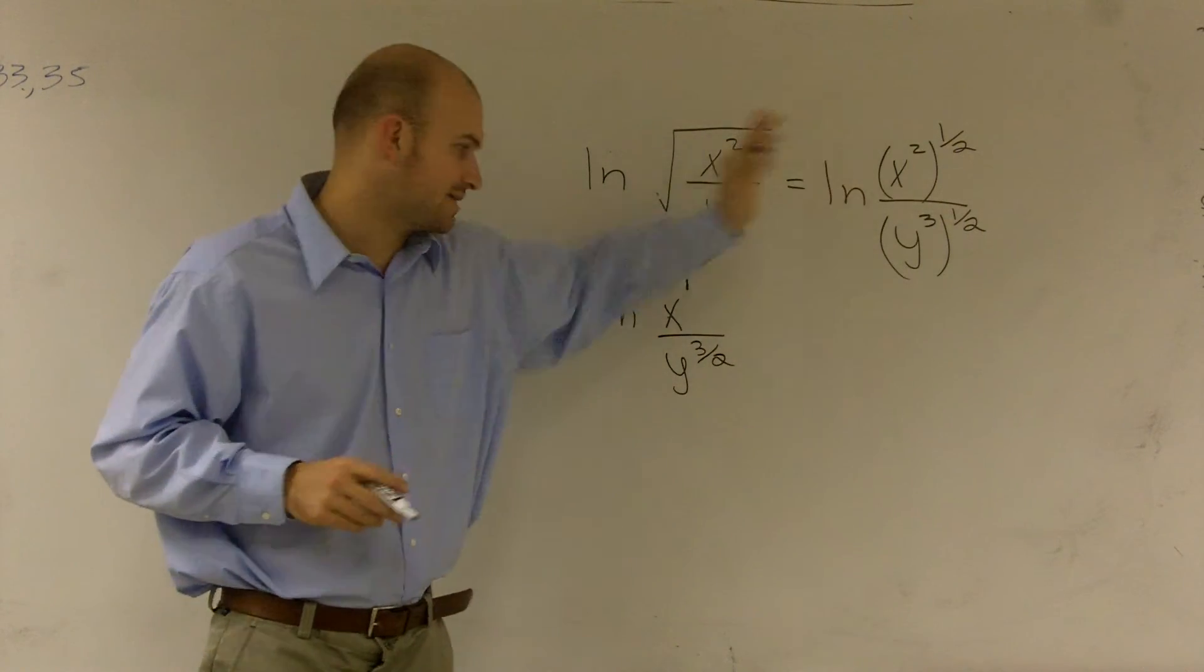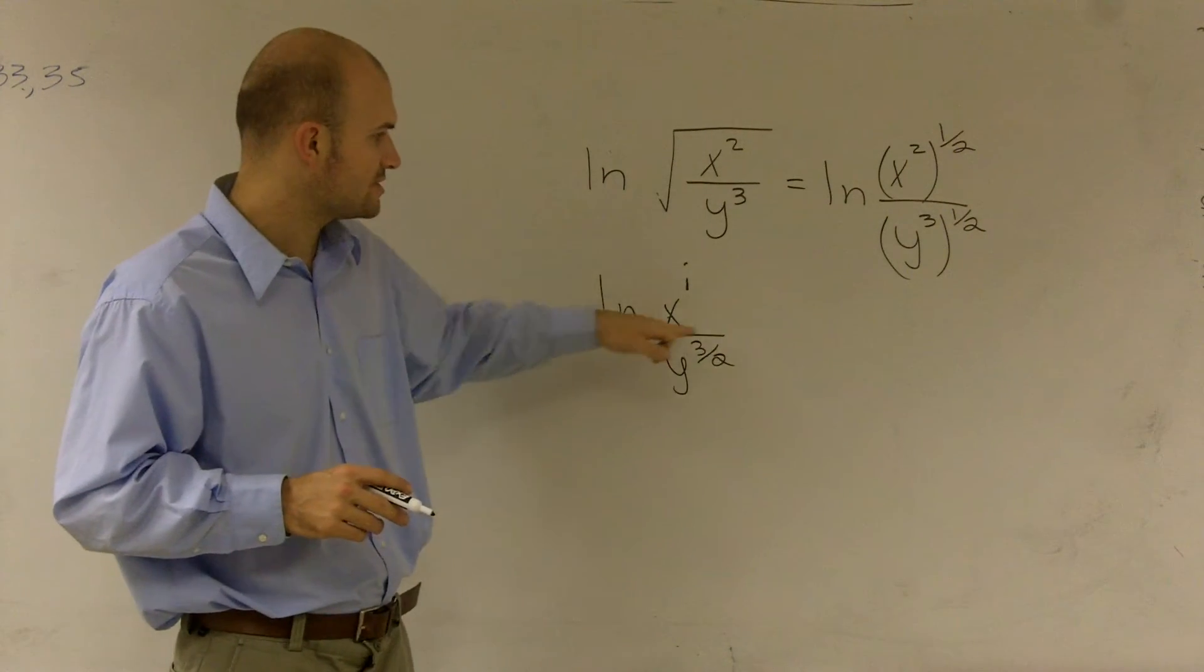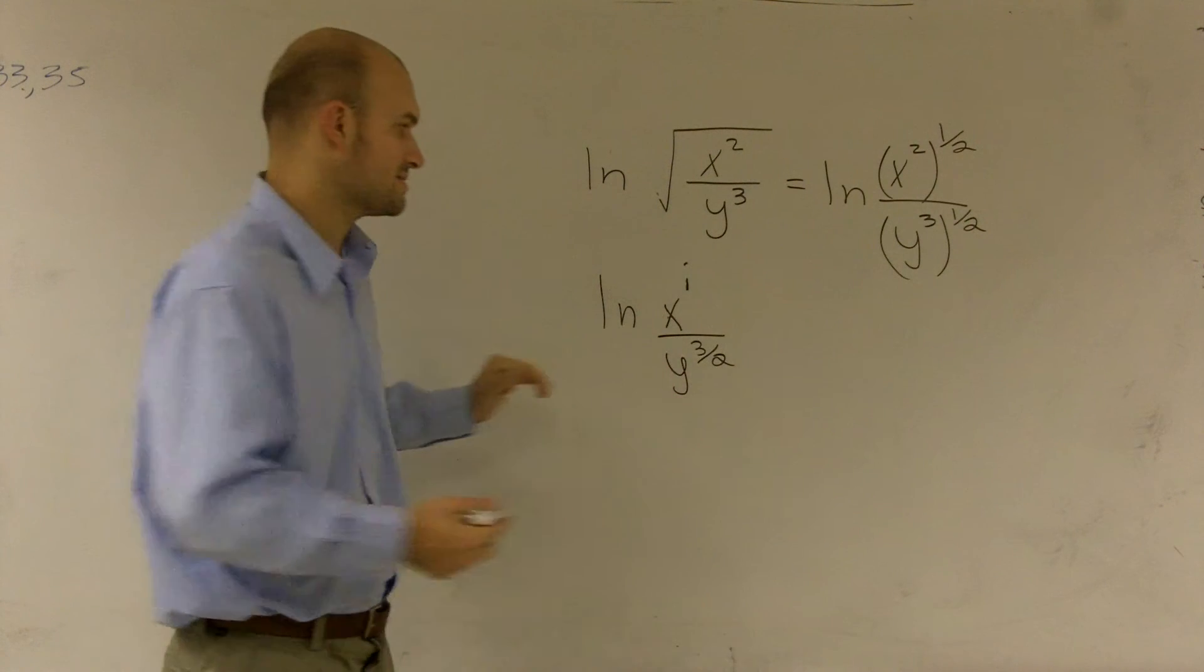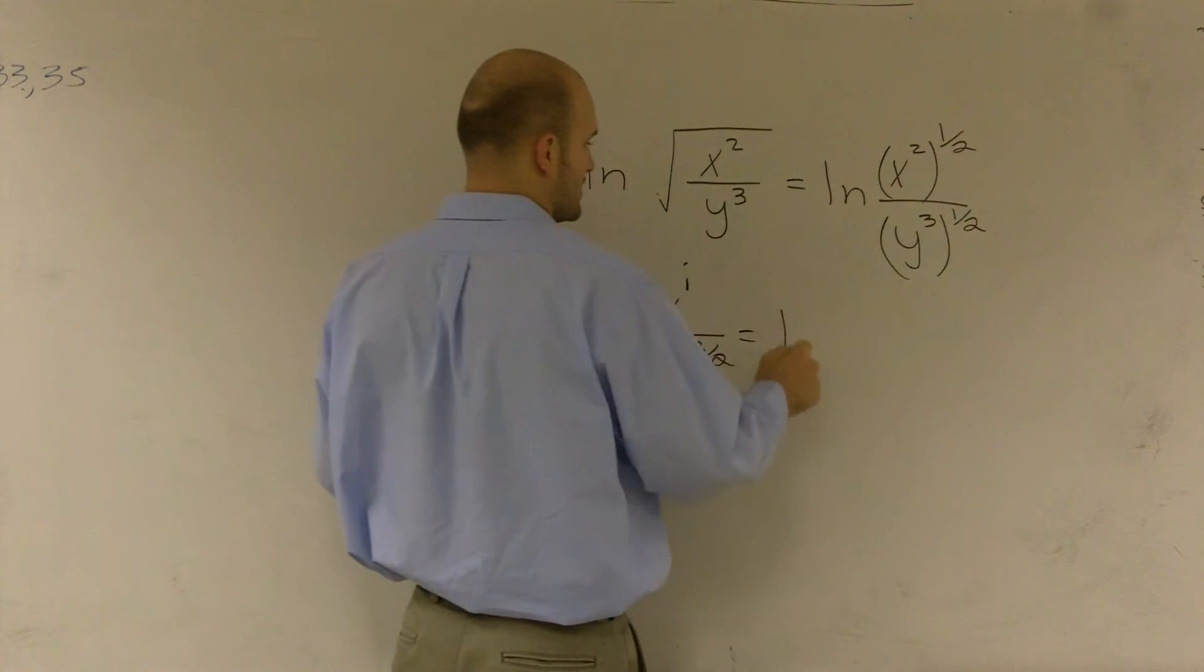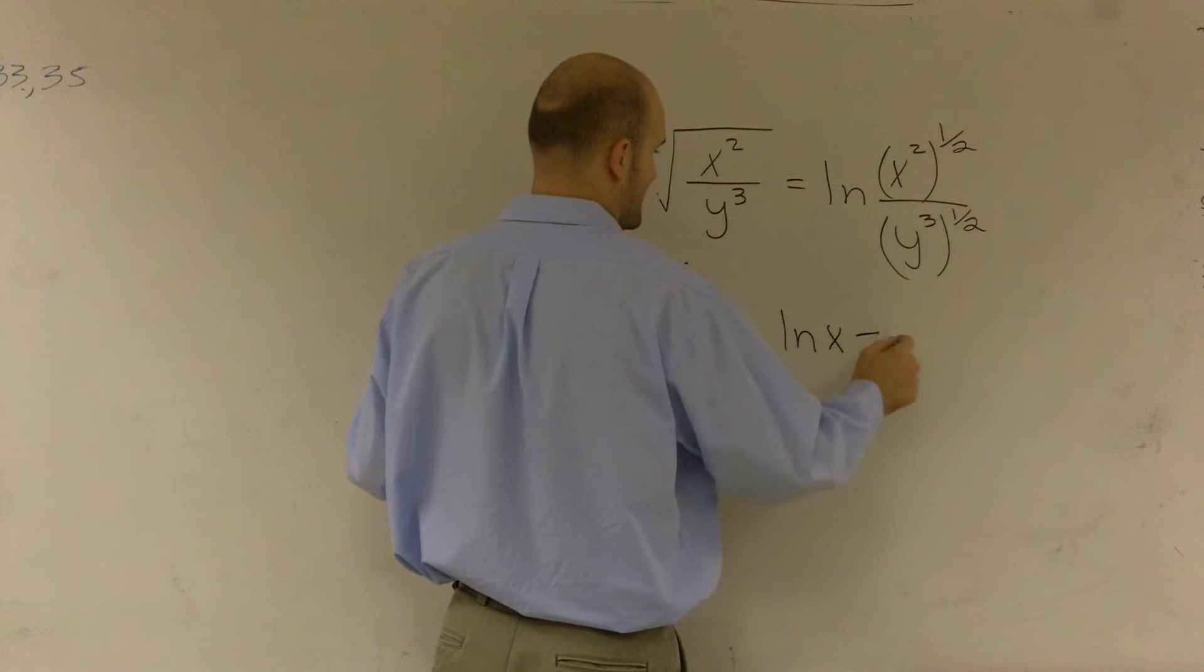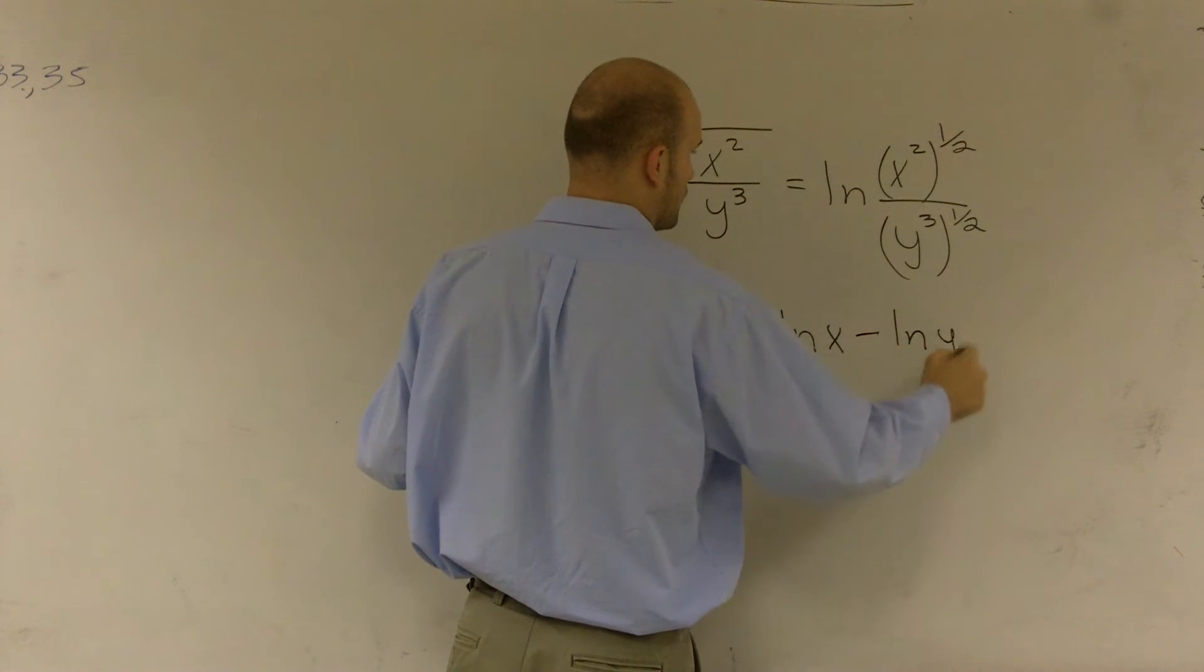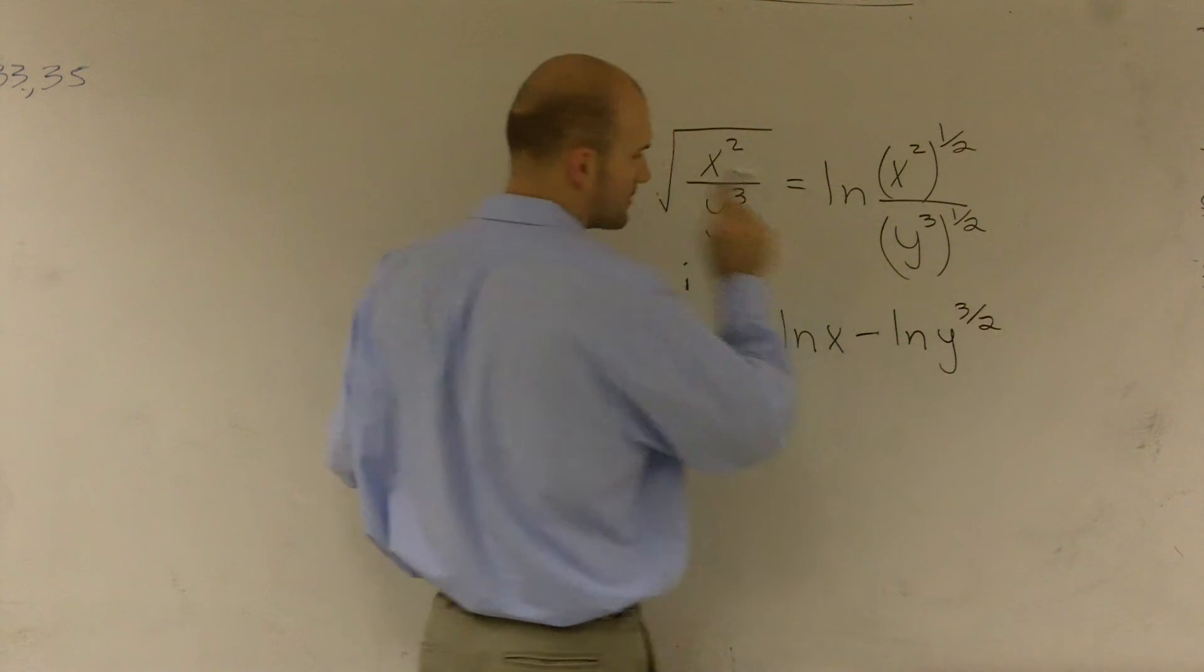So now I have my exponents simplified. The next thing I notice is since I'm using division, I can rewrite this as a subtraction problem. So I can get ln(x) minus ln(y^(3/2)).